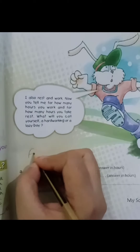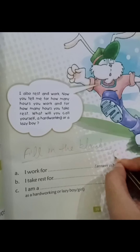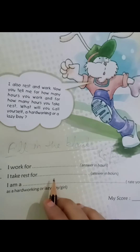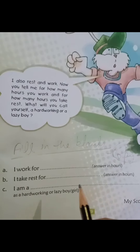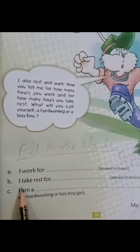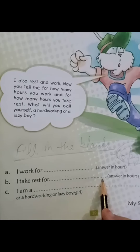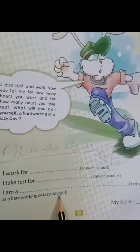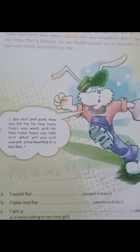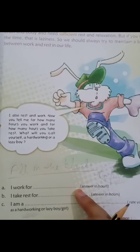Next work is fill in the blanks — you will do this in your copy. This exercise is only for your information and is all about you, so you will fill it yourself. For example: I work for how many hours — 10 hours, 8 hours? I take rest for how many hours — 6, 8, or 9 hours? Then write: I am a hardworking boy or girl, or lazy boy or girl. I know everyone will write hardworking! Complete Chapter 4: write the chapter name, then the definition, then My Quality Words, then fill in the blanks. Thank you, students.